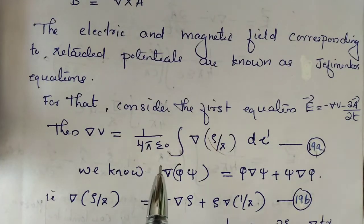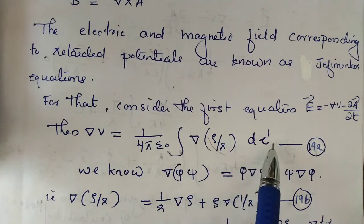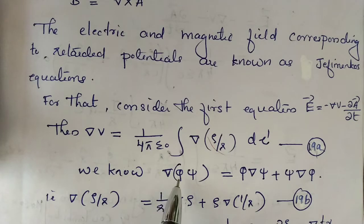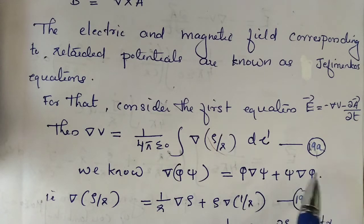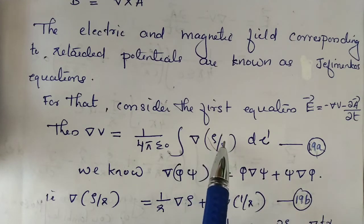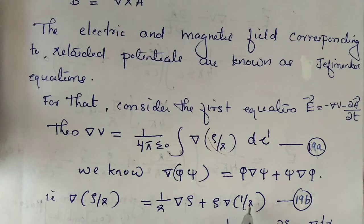Del V is equal to 1 by 4 pi epsilon 0, integral of del of (rho by r) d-tau prime. We know the identity: del of (phi psi) equals phi del psi plus psi del phi. Applying this to rho and 1 by r, we get del of (rho by r) equals (1 by r) del rho plus rho del of (1 by r). We call these two terms 19a and 19b.